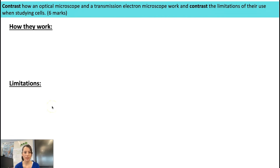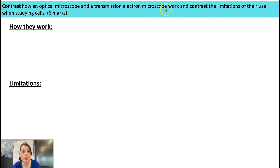For each question as it comes up, pause the video, have a go, and then you can go through the answers with me. I'm also going to show you two different options of how you could present these answers. The first one is a six-mark question: contrast how an optical microscope and a transmission electron microscope work, and contrast the limitations of their use when studying cells.